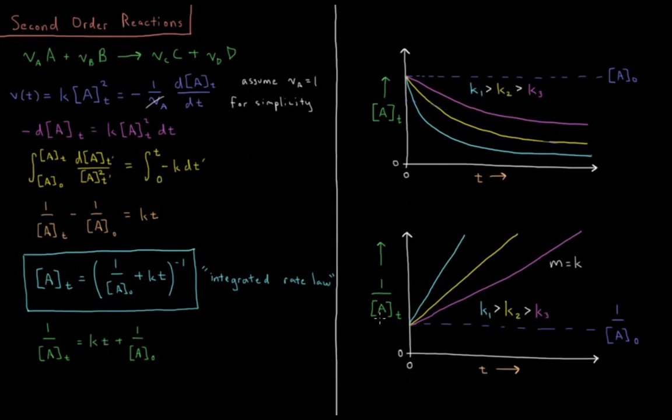If I plot 1 over A of T, it starts out at 1 over A naught, and then over time, 1 over A of T is going to increase linearly, depending on my rate constant.